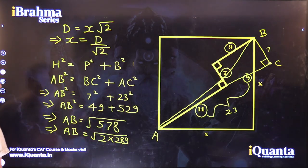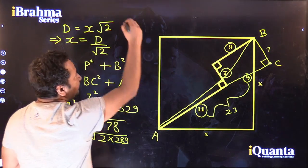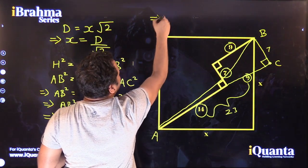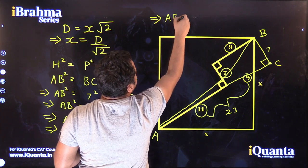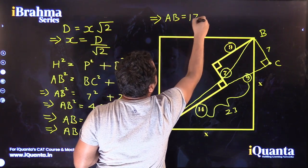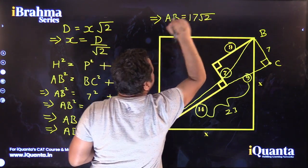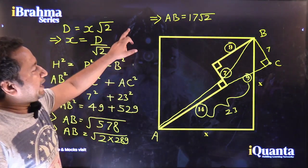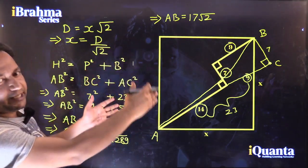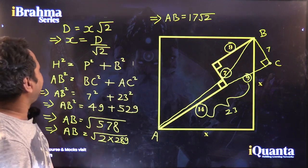So I can say that AB is equal to 17 times root 2. This is the value of AB, which is originally the diagonal of the square.